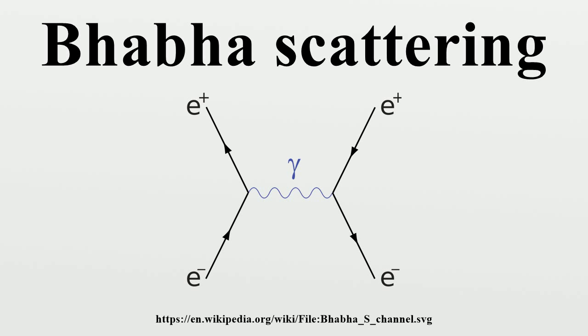Bhabha scattering is named after the Indian physicist Homi J. Bhabha. The Bhabha scattering rate is used as a luminosity monitor in electron-positron colliders.